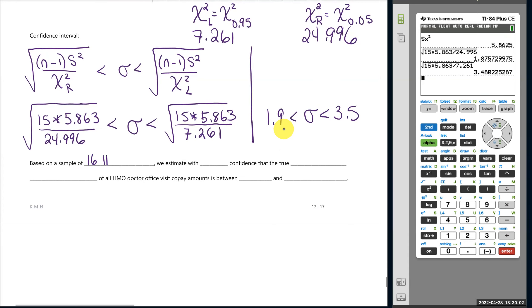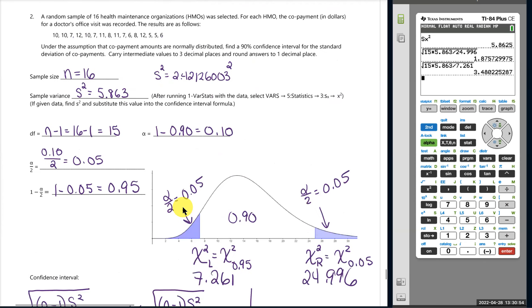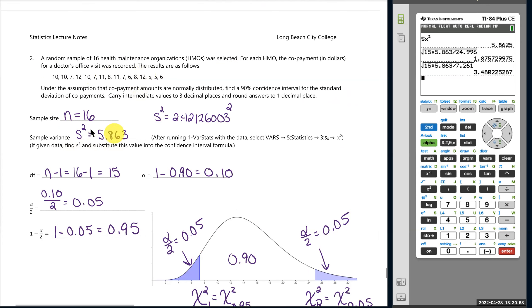Based on a sample of 16 HMOs, we estimate with 90% confidence that the true standard deviation of all HMO doctor office visit copay amounts is between 1.9 and 3.5 dollars. We're not estimating the cost of a visit on average, we're estimating how much variation there is in these costs. That is our estimate for the population standard deviation. So you know what to do if they give you data - find S squared and then put that in the formula.